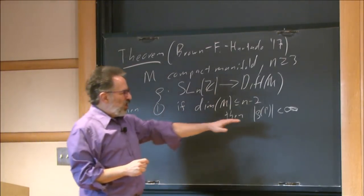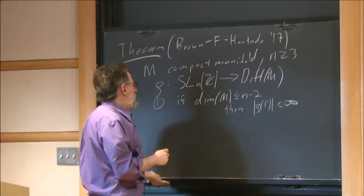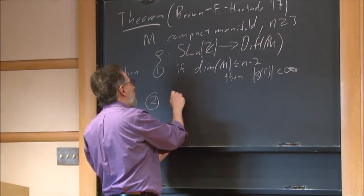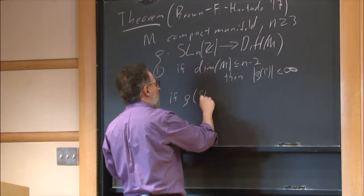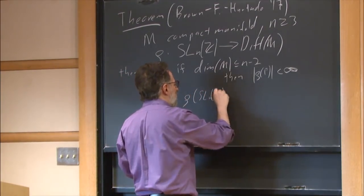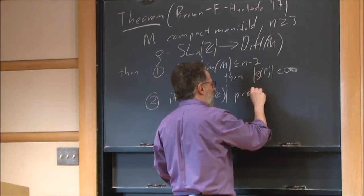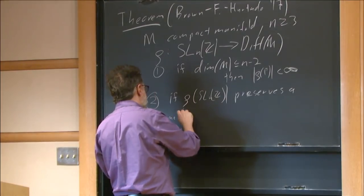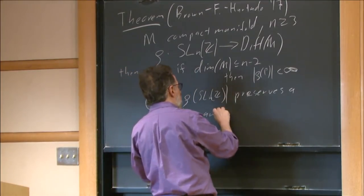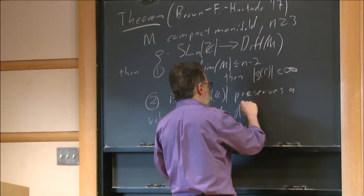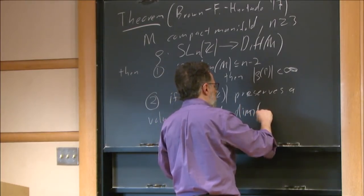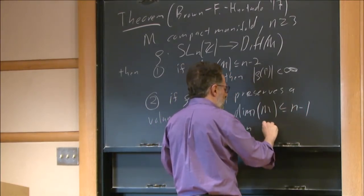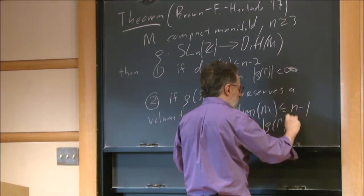You should think of this as a triviality kind of statement. We're doing dynamics here, and dynamics is about iterating maps infinitely often. So if your image is finite, there are no interesting dynamics. It's also true that you can't really hope for any sharper control than this. The second conclusion is that if rho of SL(N,Z) preserves a volume form and dimension of M is less than or equal to N minus 1, then rho of gamma is still finite.